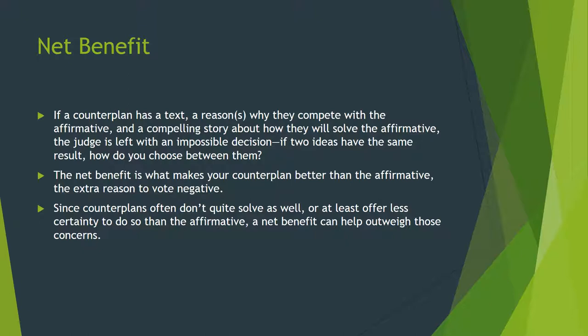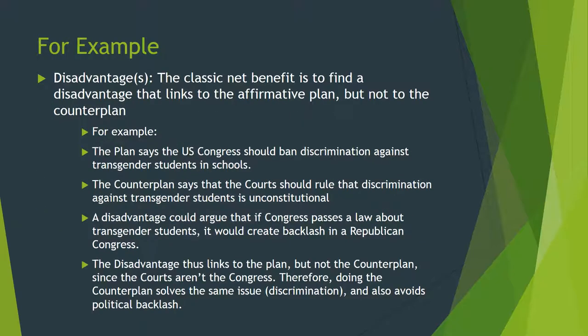Let's talk about this idea of a net benefit. If a counter plan has a text, reasons why it competes with the affirmative and cannot be done at the same time, and a compelling story about how it solves the affirmative harms, the judge is left with an impossible decision — they have two good ideas that result in the same thing. The net benefit is what makes your counter plan better than the affirmative: a reason to vote negative when things are equal. Since counter plans don't often solve quite as well, or offer less certainty than the affirmative, the net benefit can also help outweigh those concerns. The classic net benefit strategy is to find a disadvantage that links to the affirmative plan but not to the counter plan.